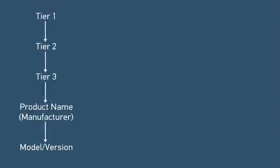Each product category consists of three tiers of categories, plus the product name, manufacturer, and model or version.